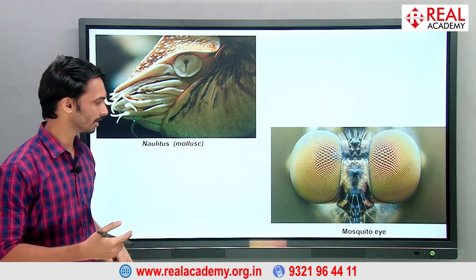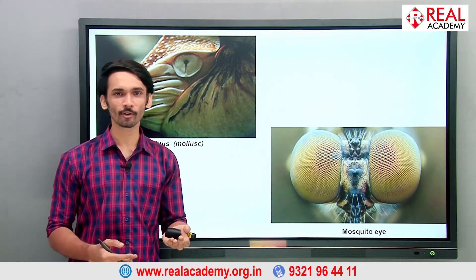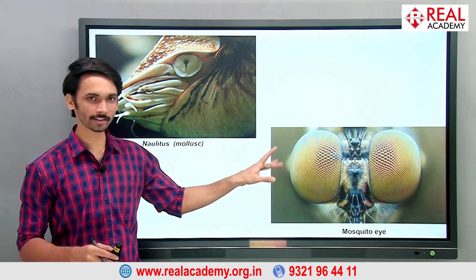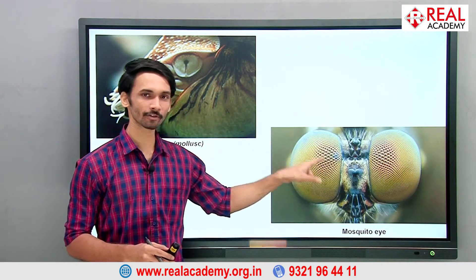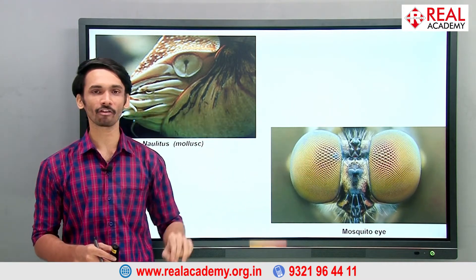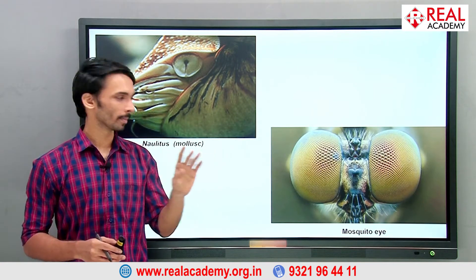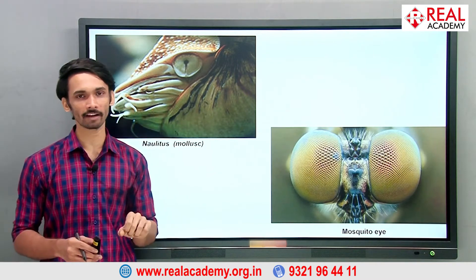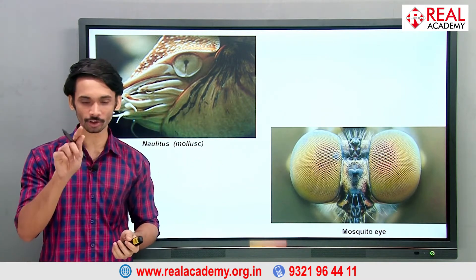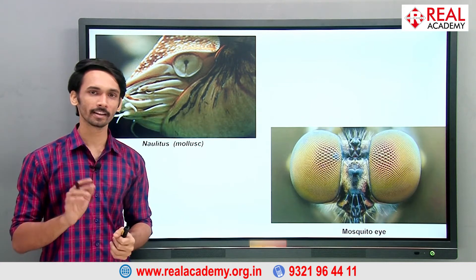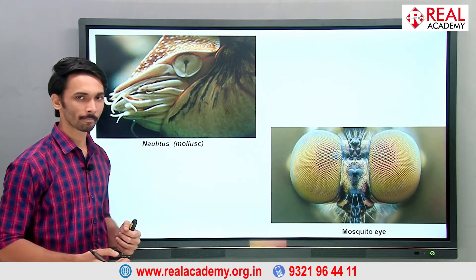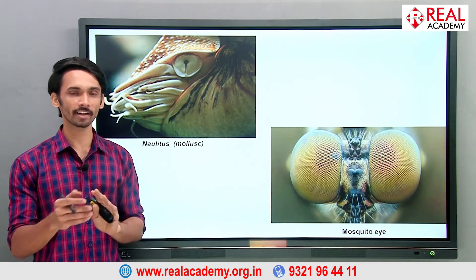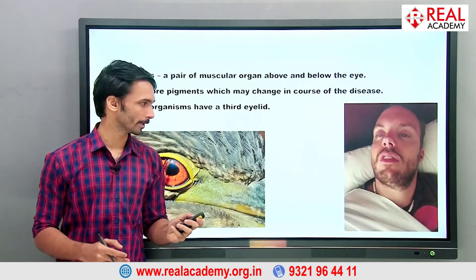Another developed eye is seen in mosquitoes and houseflies — the compound eye. You can see how many lenses are present. With so many lenses, if you stand in front of a mosquito, it sees thousands of images of you. That's called a compound eye. Both the pit eye and compound eye are not present in humans; humans have a different type of eye.